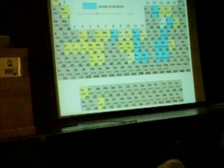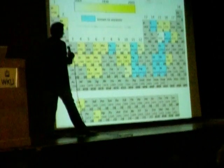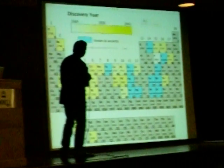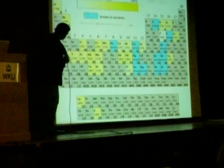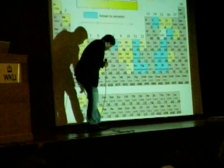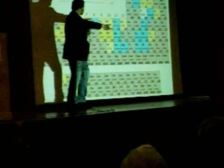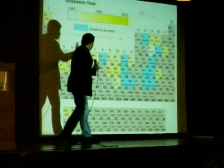Let's move a little further ahead — 1803. The diagram is getting fleshed out. Hydrogen is discovered. We get cesium, we get uranium, we get tellurium. That's kind of cool. Let's keep going.